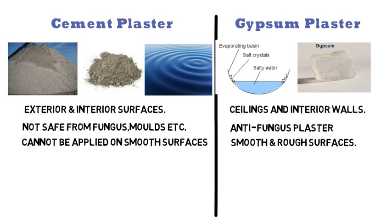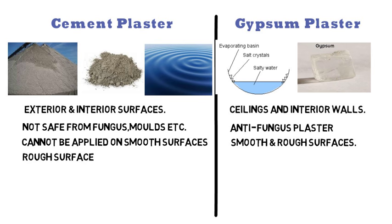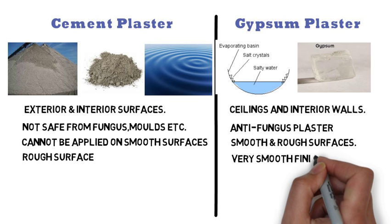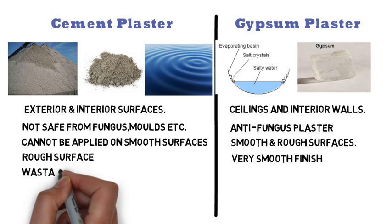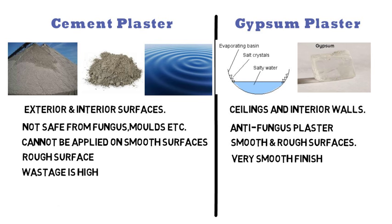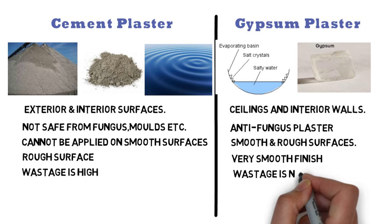Cement plaster gives a rough surface. Whereas gypsum plaster gives a very smooth finish which makes it compatible for paints. During the application of cement plaster, wastage is high, while during the application of gypsum plaster, the wastage is nominal.